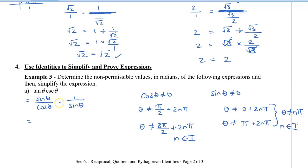To simplify the expression, we can cancel the sine theta in the numerator and denominator, leaving us with 1 divided by cos theta. And 1 divided by cos theta is secant theta.